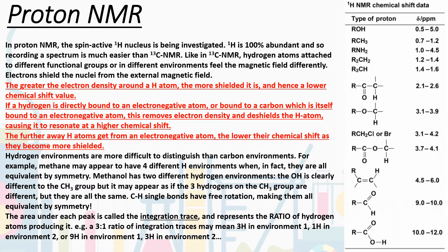If we take methanol, there are two different hydrogen environments. Methanol is CH₃OH. The hydrogen on the oxygen is clearly in a different environment to the CH₃ group. It may appear that the three hydrogens on the CH₃ group are all different, but actually they're all the same, because CH single bonds have free rotation, and this makes them all equivalent by symmetry.